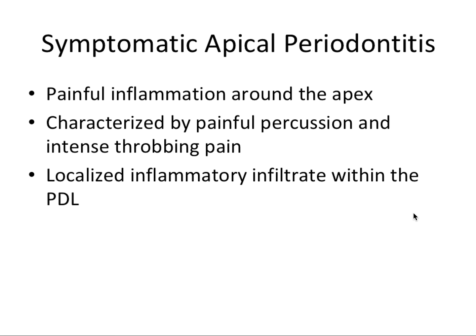Symptomatic apical periodontitis involves painful inflammation around the apex, characterized by painful percussion and intense throbbing pain due to a localized inflammatory infiltrate within the periodontal ligament. If a tooth is vital and has this diagnosis, simple occlusal adjustment often relieves pain — the tooth may be high in occlusion, and shaving a little tooth structure off reduces the heavy occlusal contact. If the tooth is necrotic, endodontic therapy is necessary to prevent disease progression, as the apical infection originated from infection in the pulp spreading through the foramen to the apical tissues.